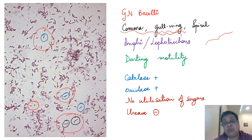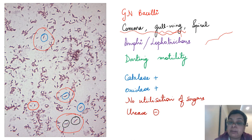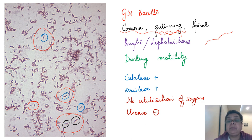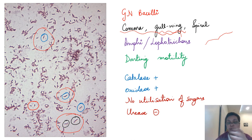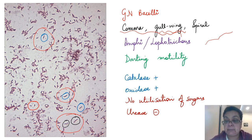Campylobacters are catalase and oxidase positive. They do not utilize sugars and are urease negative. Urease is positive for a closely related bacterium in the same family Campylobacteriaceae — that is Helicobacter — which is urease positive. You can differentiate the two by the urease test.